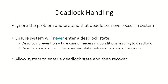In the previous videos we have been discussing about deadlocks and how they are caused. So what are the ways of handling deadlocks? The easiest way is to ignore the problem and pretend that deadlocks never occur in systems. Most modern operating systems use this strategy, also known as the ostrich strategy, where you simply ignore the problem.